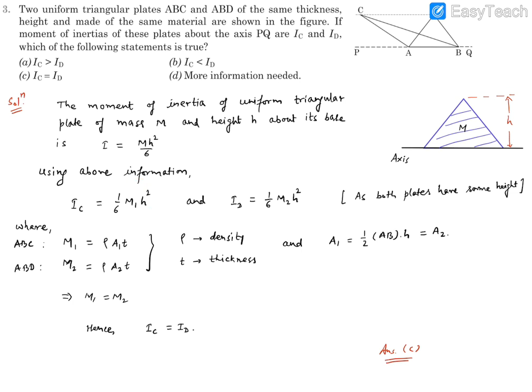So we are considering that this height is H. And both are having the same height. So it's going to be H square M1 into 1 by 6.